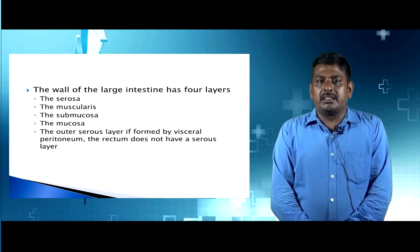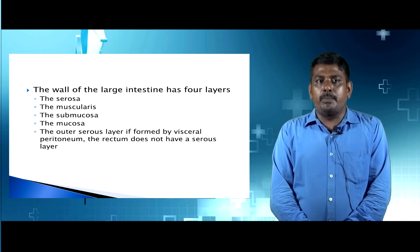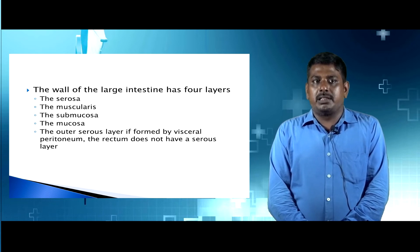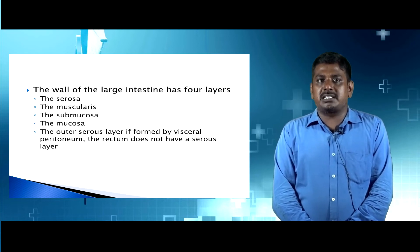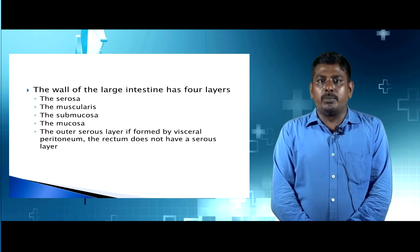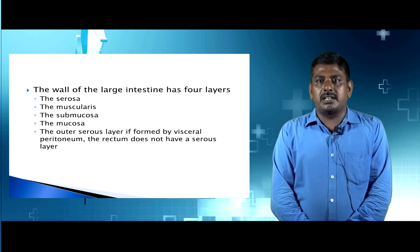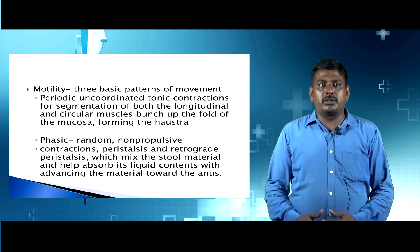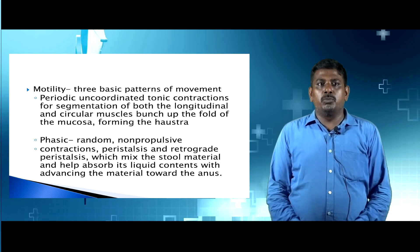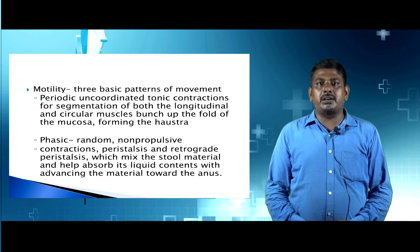The wall of the large intestine has four layers: the serosa, the muscularis, the submucosa, and the mucosa. The outer serous layer is formed by the visceral peritoneum. The rectum does not have a serous layer.